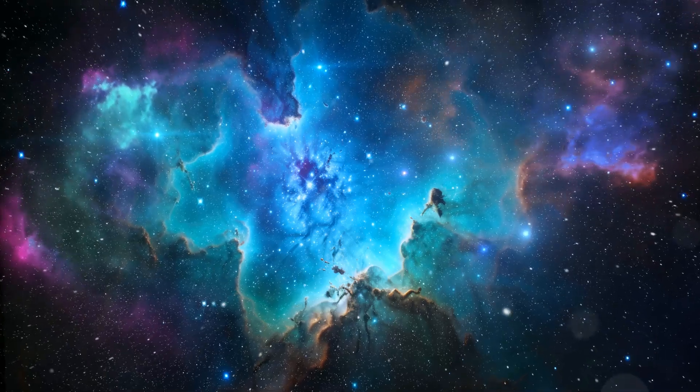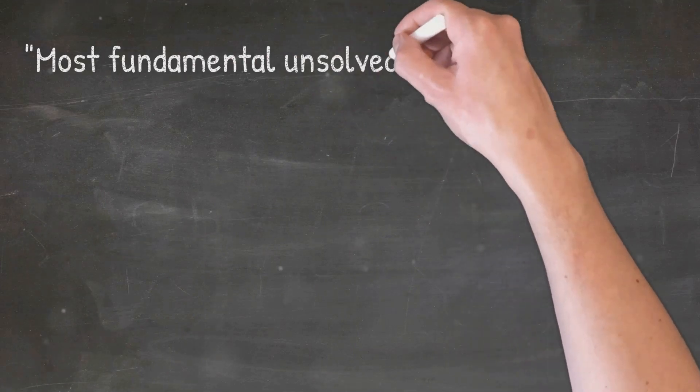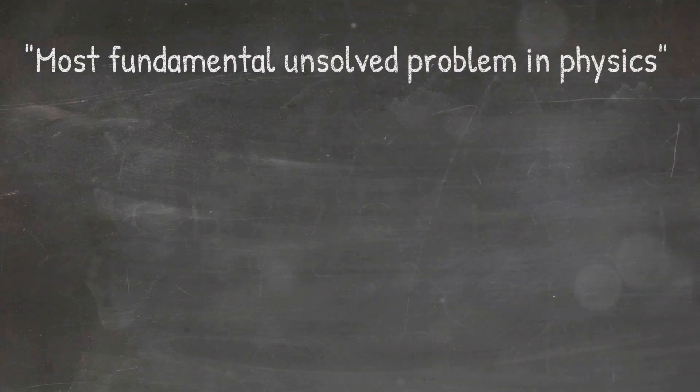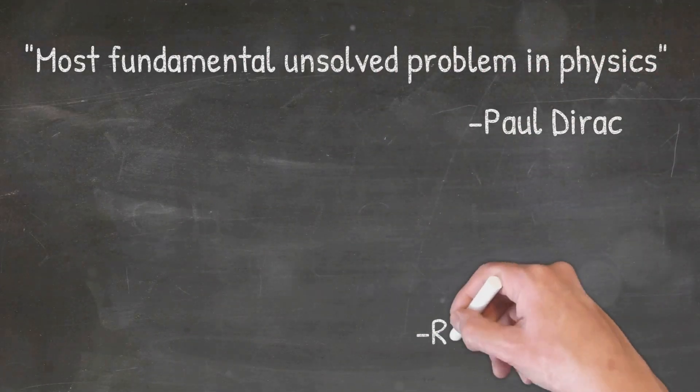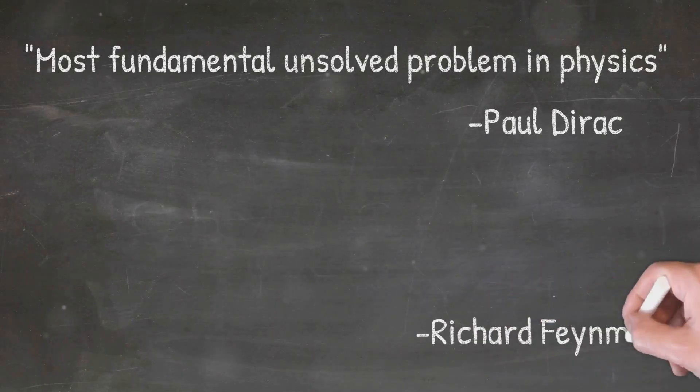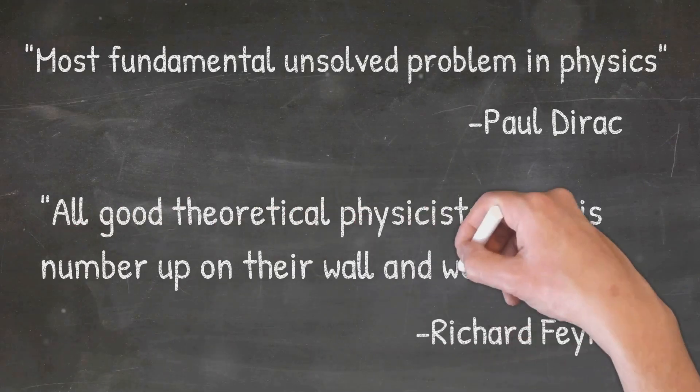However, there's something uniquely compelling about this number. It's been called the most fundamental unsolved problem in physics by Paul Dirac and was a lifelong puzzle for Richard Feynman, who noted in 1985 that all good theoretical physicists put this number up on their wall and worry about it. But why does alpha deserve such attention?